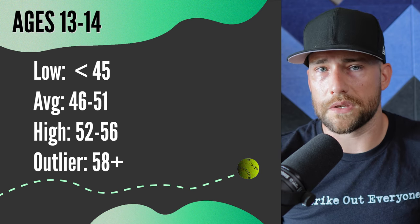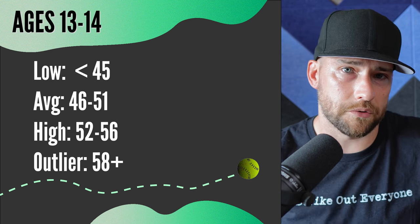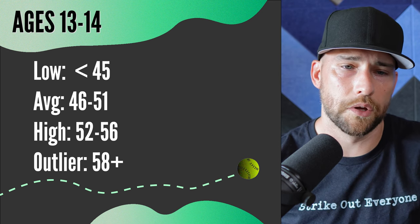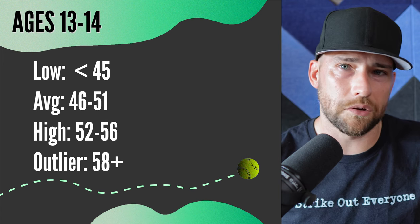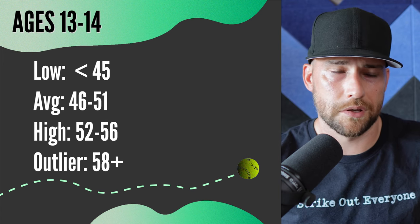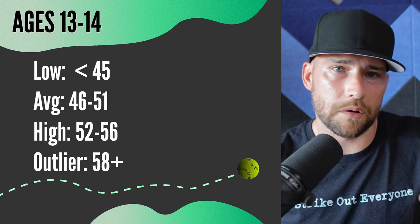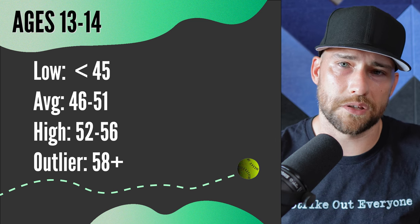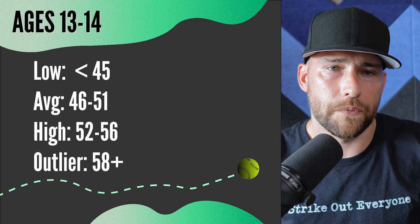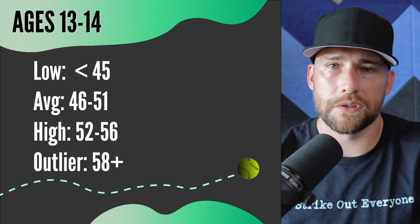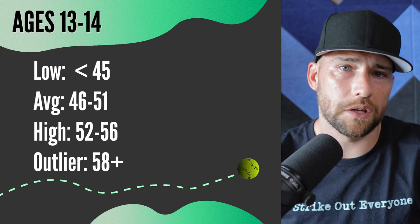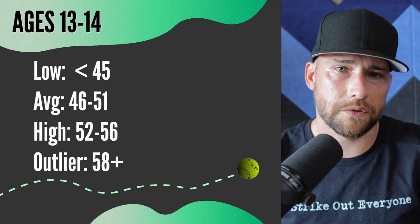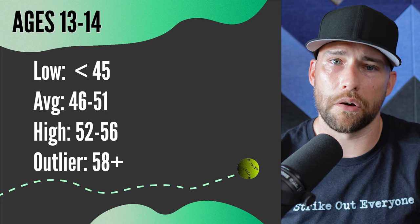At 13 and 14, this is where players really start to hit more of a growth spurt. You'll start to see players shoot up a lot more here because girls have that growth spurt earlier than boys do. If you're stuck in the low 40s, you're really going to start to struggle as players get faster. The average here is going to be in the mid 40s into the 50s. You want to start getting into the 50s by this age, especially by 14. Outliers — the really athletic, more physically developed girls — are going to start getting into the middle to upper 50s, which requires pretty good mechanics and time in the weight room.